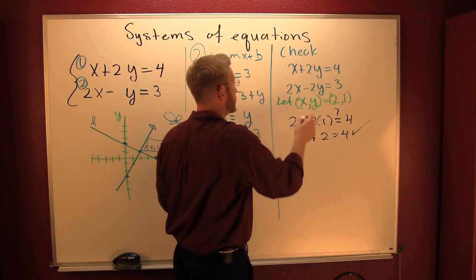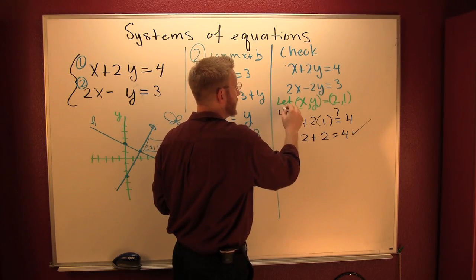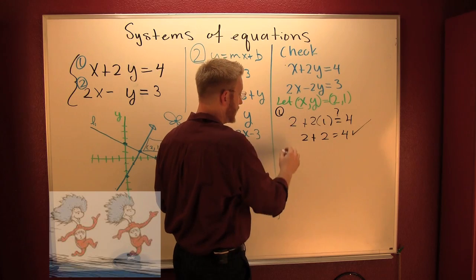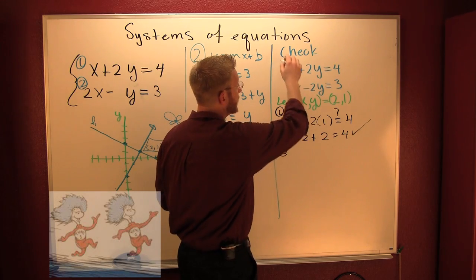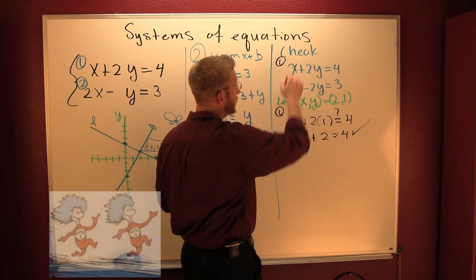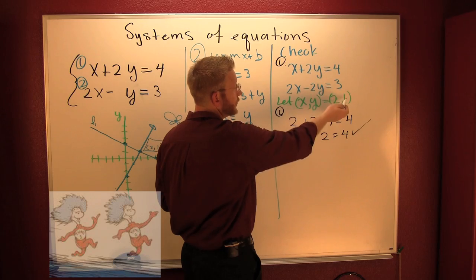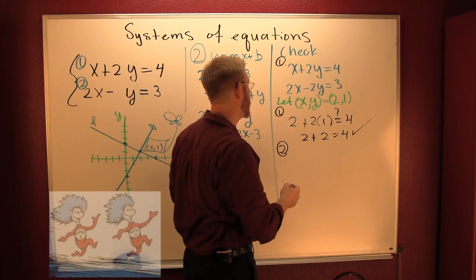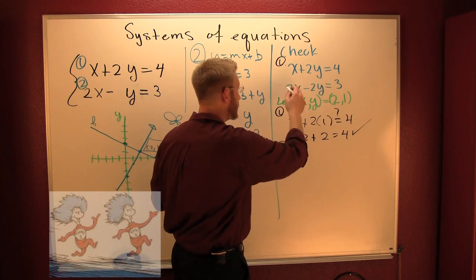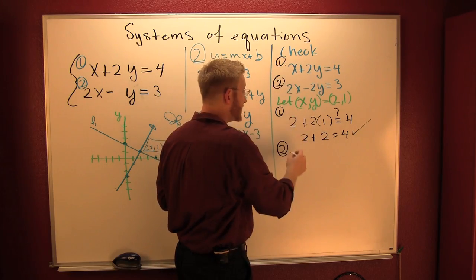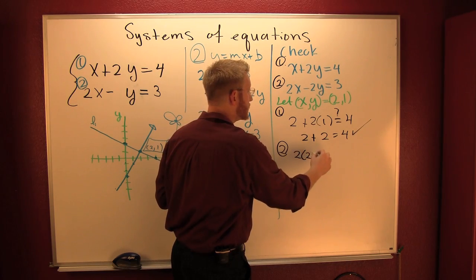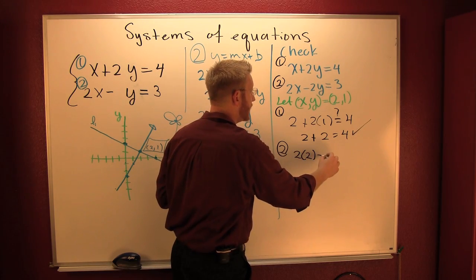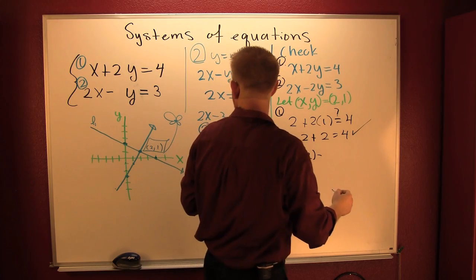Let's check the second one. This was checking thing 1, now let's check thing 2. When we check thing 1, we replace the x's with 2's and the y's with 1's. Now when I'm checking thing 2, I'm gonna replace the x's with 2's and the y's with 1's. 2 times 2 minus...